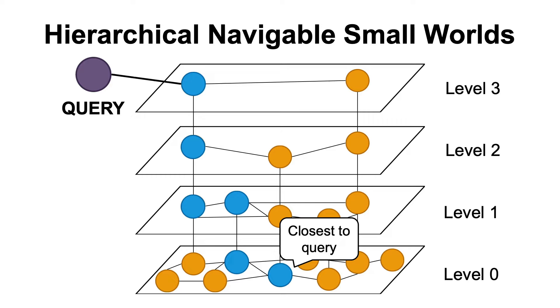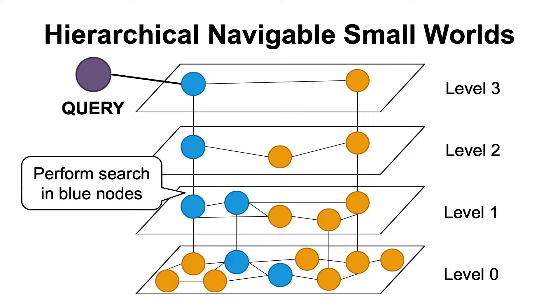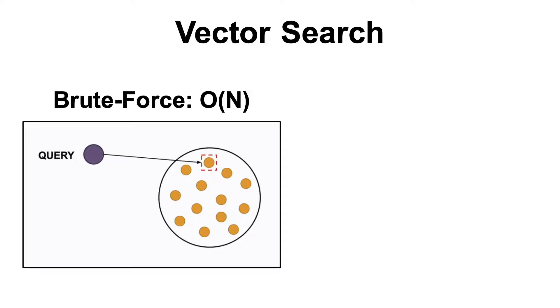Now, as in the navigable small worlds algorithm, the final step is to take all these vectors that we have visited, sort them, and return the top k best matching based on the similarity score that we are using.